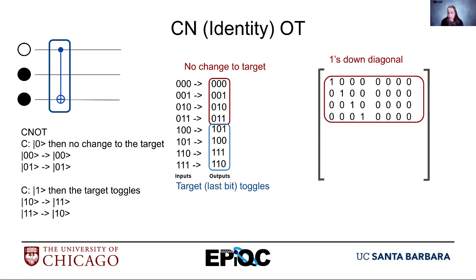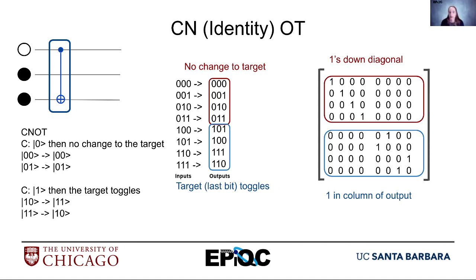For the last four rows, there were changes, so the ones are not down the diagonal. In row 4, I put a 1 in position 5. In row 5, I put a 1 in position 4. In row 6, I put a 1 in position 7. And in row 7, I put a 1 in position 6. This is how we take a set of inputs and outputs and translate them into a matrix.